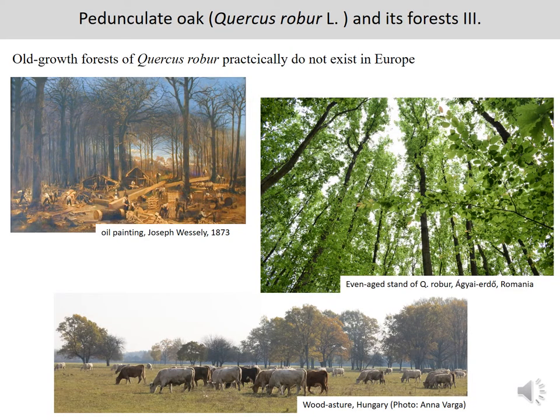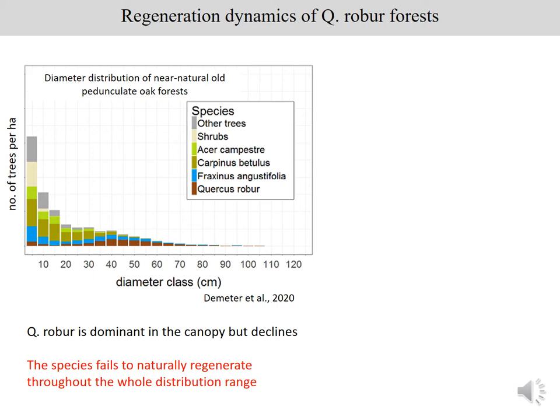Unfortunately, near-natural stands of its forests are quite rare in Europe because of previous land use and former forest management. Those forests were converted into pastures and arable fields, and due to its high timber value, it was depleted by over-exploitation, and the remaining stands were converted into even-age stands. If we look at the stand structure of the remaining near-natural stands, certain diameter and age classes are missing.